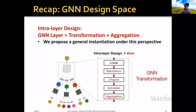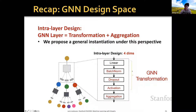In this paper, we introduced the notion of GNN design space. In this GNN design space, we consider first the intralayer design. A GNN layer can be understood as two parts: the transformation function and the aggregation function. We propose a general instantiation under this perspective containing four design dimensions: whether to add batch norm, whether to add dropout, the selection of the activation function, and the selection of the aggregation function.